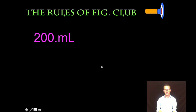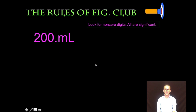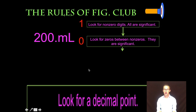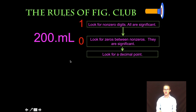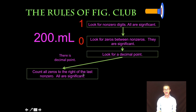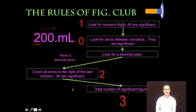Let's try 200. milliliters — with a decimal point. Working through the rules of big club one more time. Look for non-zero digits: the 2 will be significant. Rule number two: look for zeros between non-zeros — we have a couple of zeros but they're not trapped between non-zero digits, so they're not significant yet. Rule number three: look for a decimal point — we do have one this time, so we take a detour to rule four. Count all zeros to the right of the last non-zero: the last non-zero is the 2, so we count both zeros to the right. Both of these zeros are significant, giving us three significant figures total. Just the addition of that decimal point tells us something about the precision of the equipment used.